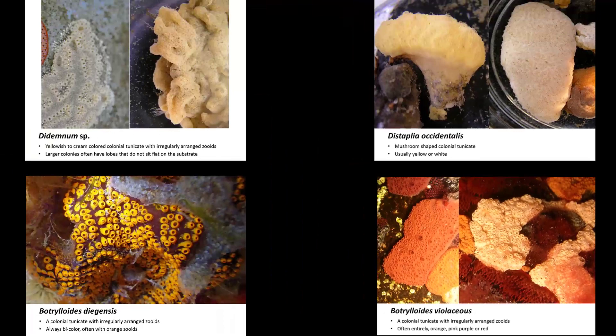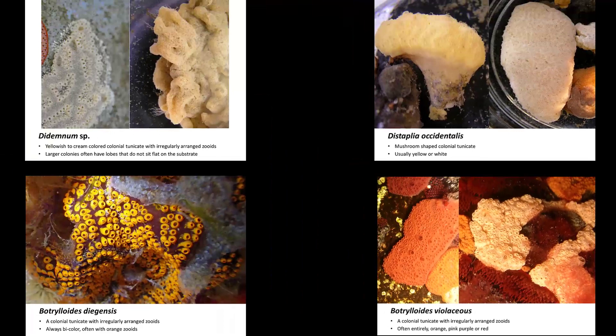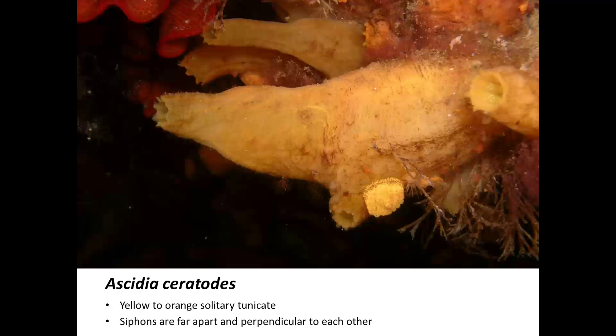One of the reasons we do percent cover is because it's difficult to count all of the individuals. In some tunicates, it can be hard to tease apart the individuals — it's not very clear exactly what an individual is. But this is still a colony of tunicates.